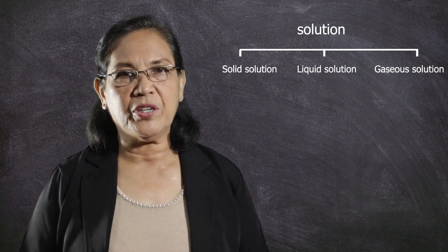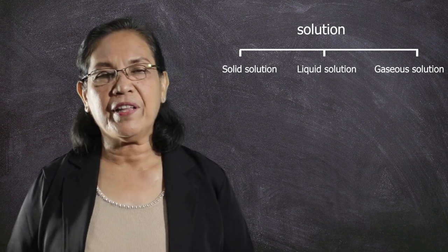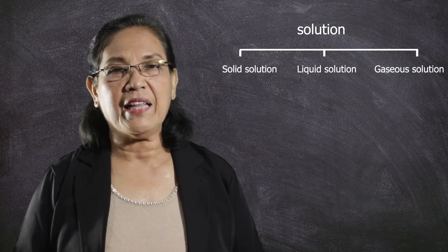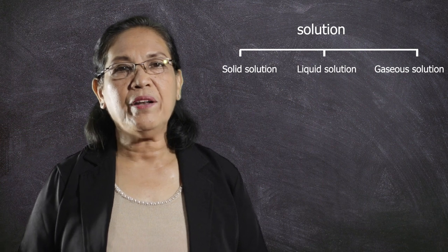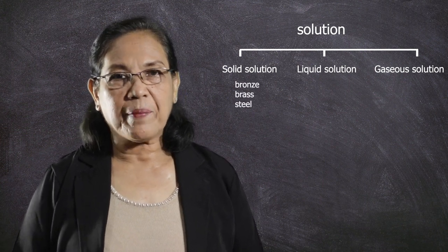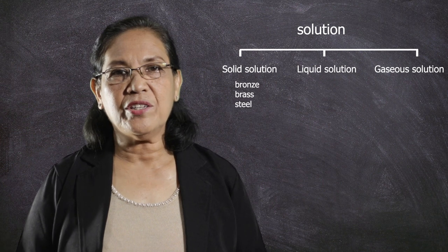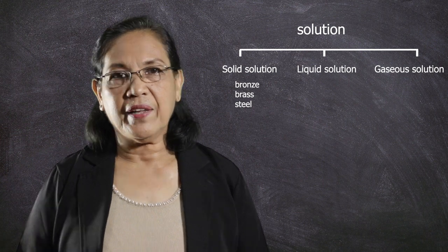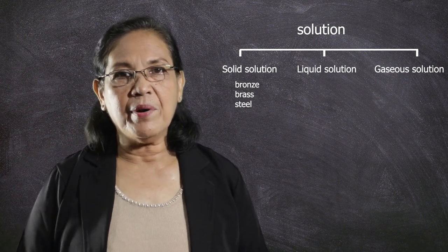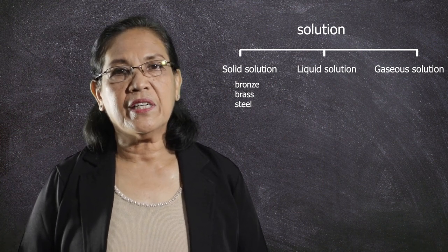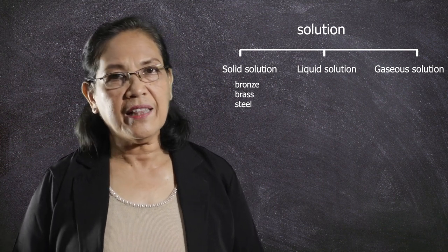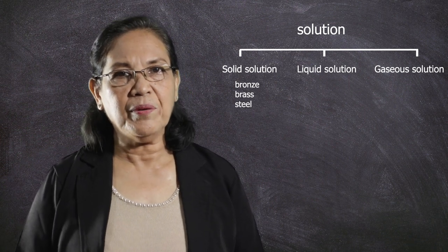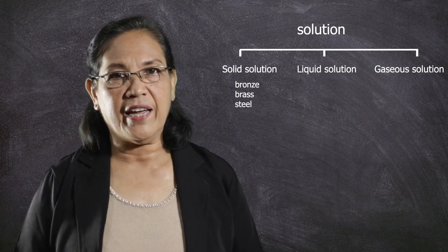When we talk of a solid solution, a good example for this is the metallic alloy, and there are many metallic alloys. One would be bronze — bronze is a solid solution composed of copper and tin. Another is brass, which is composed of copper and zinc. Another is steel, which is composed of iron and carbon.